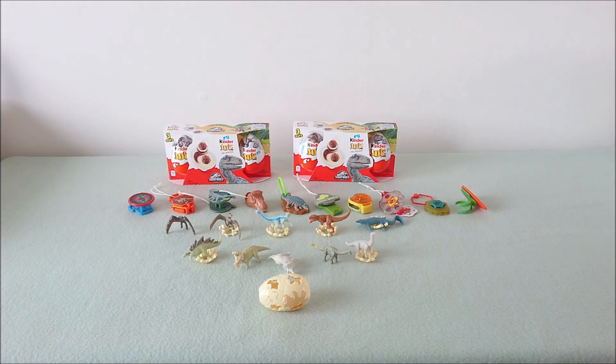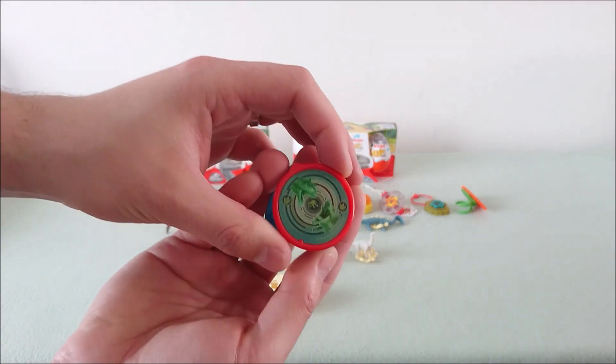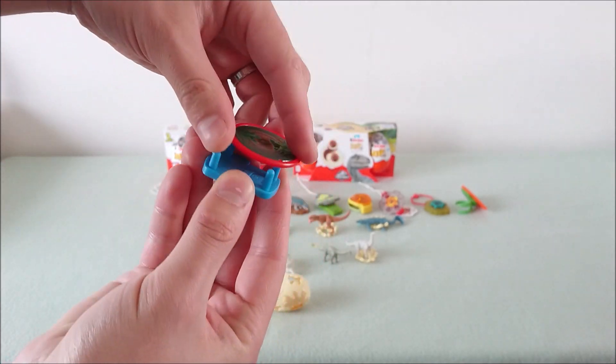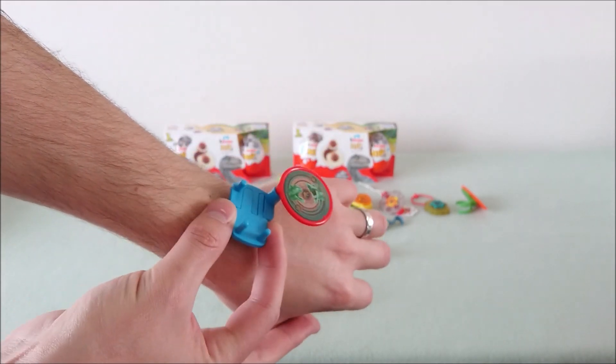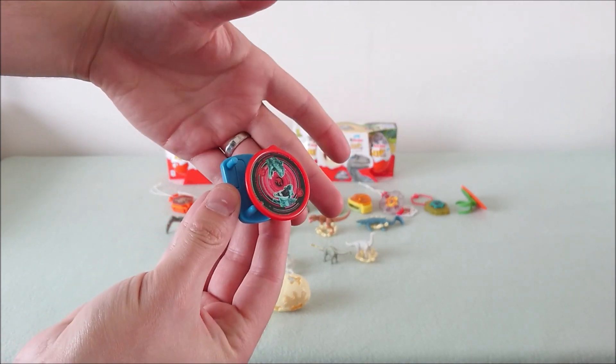And then, let's talk about the gadgets. So we have a Carnotaurus versus Baryonyx, which is something that goes on top of your watch. So you place the watch and then you close it like that.